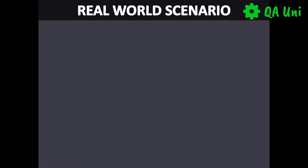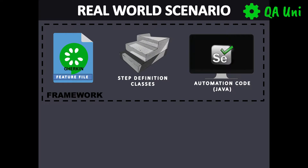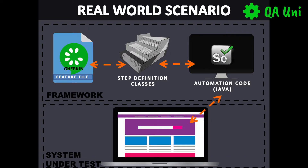I feel the best way to learn is to actually simulate a real world scenario. As part of this course we'll be using the three key components highlighted to develop a small Cucumber framework with the capabilities of conducting robust automation tests against a live system.